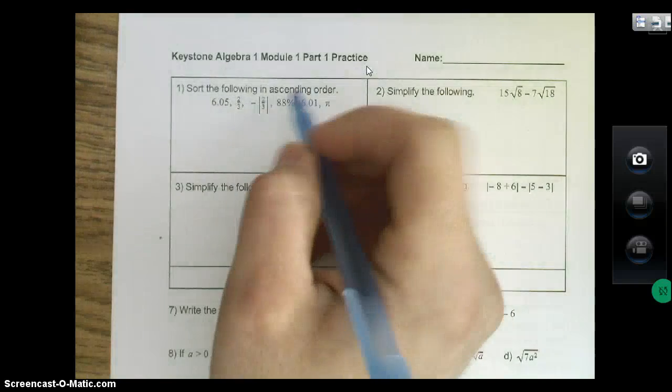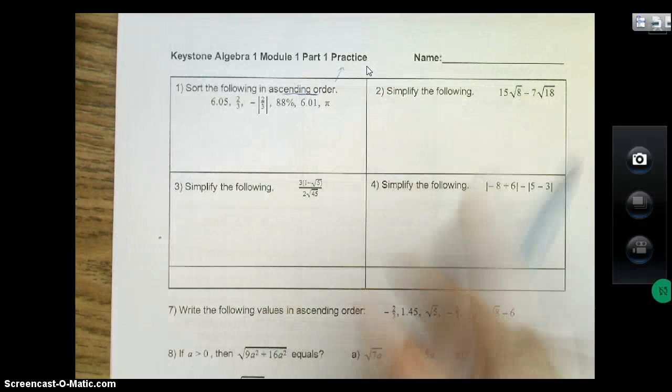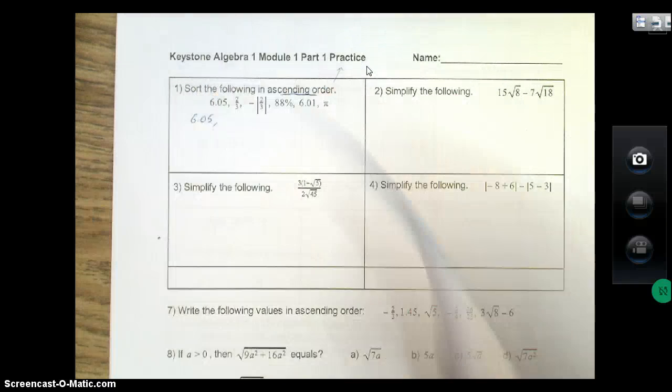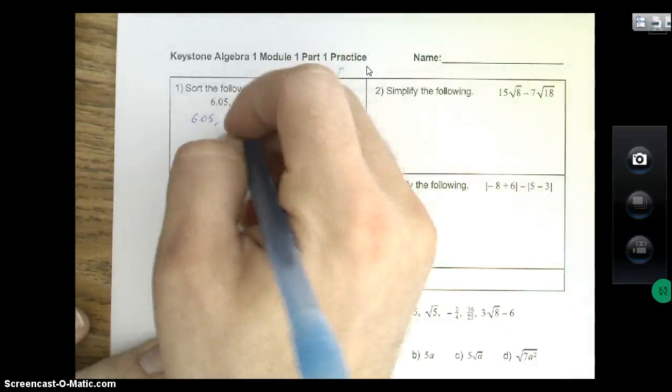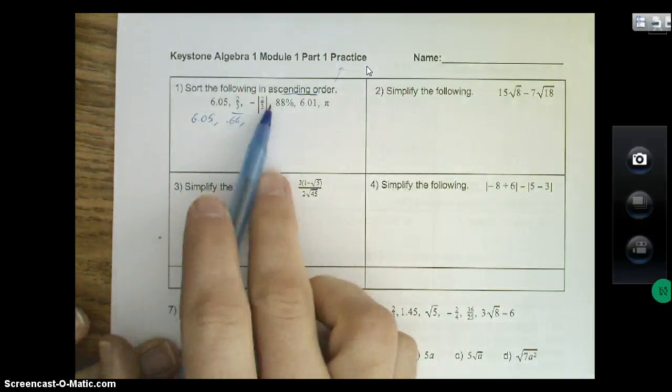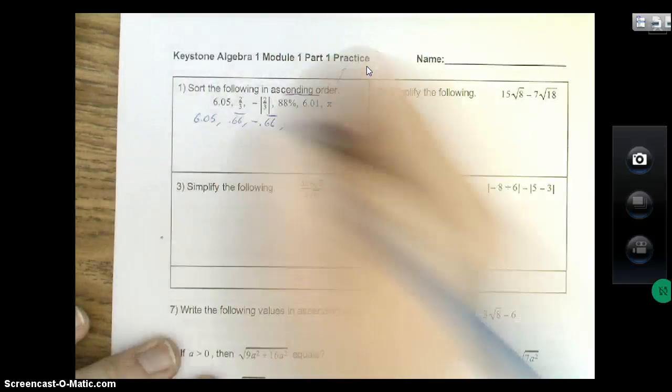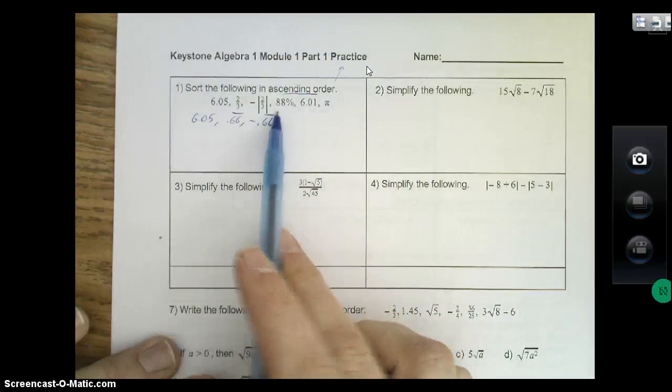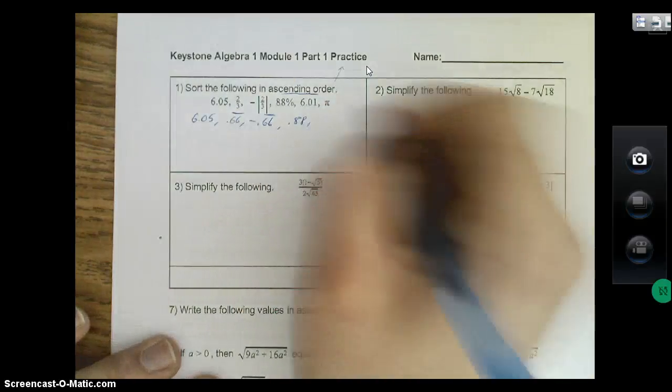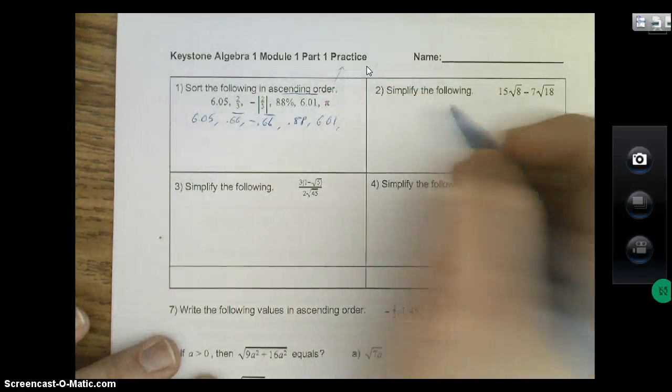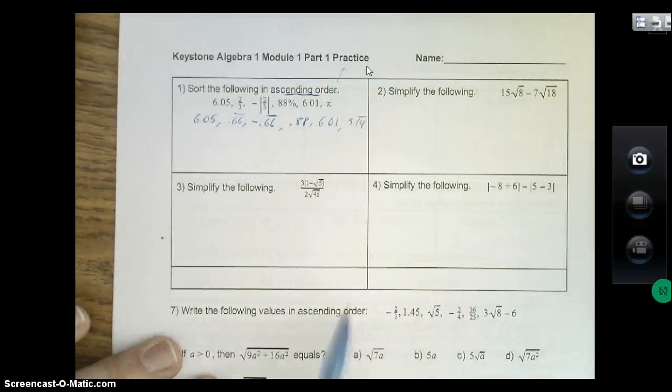Ascending order means to go up, like going from small to big. If you take all these and convert everything to decimals: 6.0105, two-thirds is 0.66 repeating, the absolute value makes it positive but the negative is on the outside so it ends up being negative 0.66 repeating, 88% converts to decimal 0.88, 6.01 is 6.01, and pi is 3.14159 and so on.